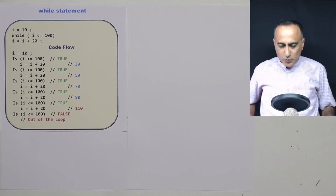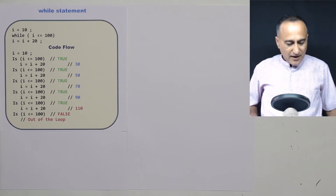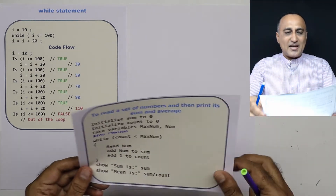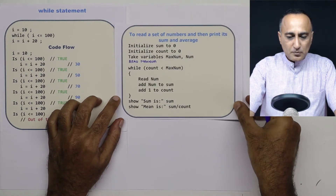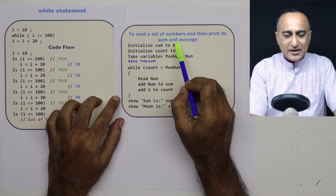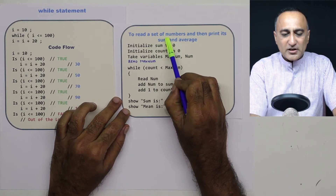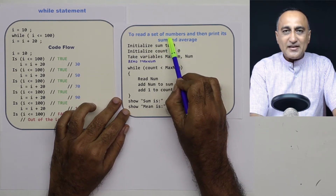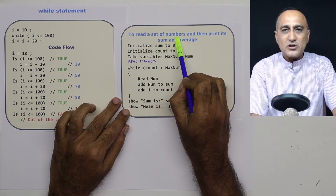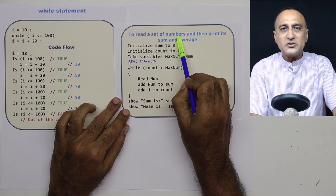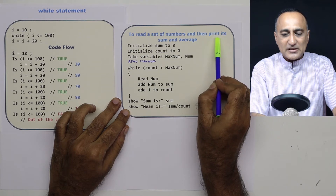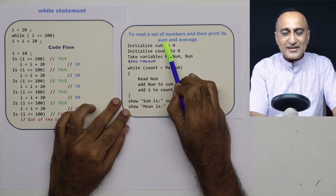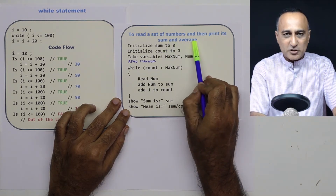Now what we shall do is look at how a while loop is used — I'll talk about a pseudo code. In this pseudo code, I'm asking a user to enter some numbers. The user may say he wants to enter 10 numbers, 20 numbers, and so on. When the user finishes entering those numbers, I'm going to print the sum and the average.